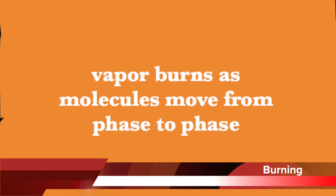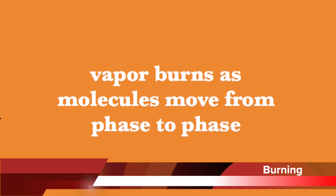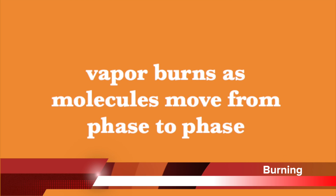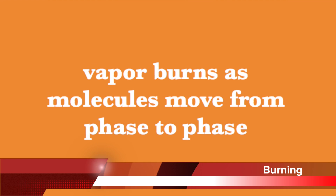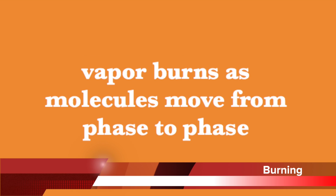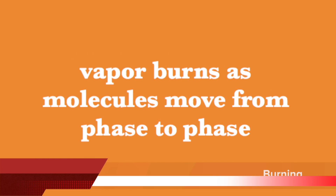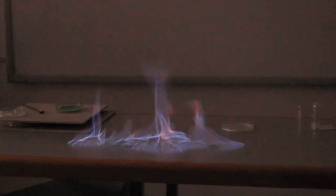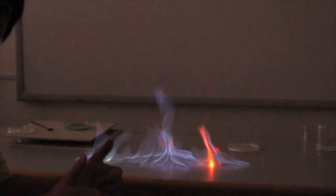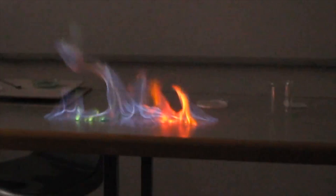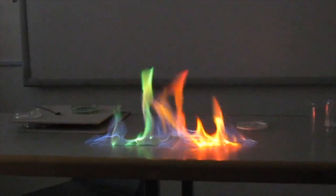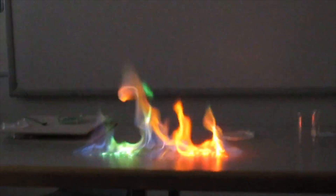Perhaps surprisingly, flammable liquids themselves do not burn, but rather it is the vapor above the liquid that burns as the molecules move from the liquid to the gas phase. If spilled on the bench top or the floor, these flammable chemicals quickly vaporize and air currents can spread them into a wide area where an ignition source could start a fire.